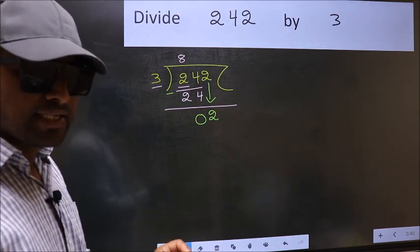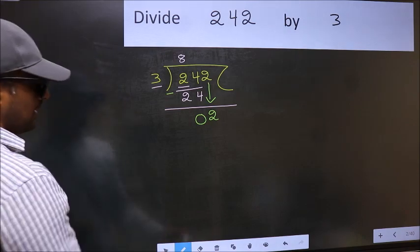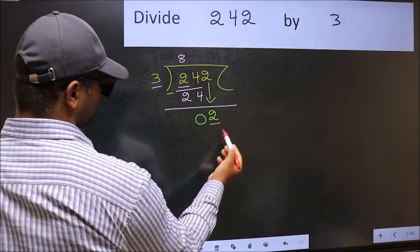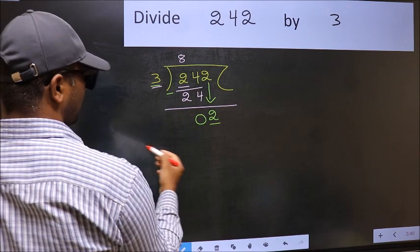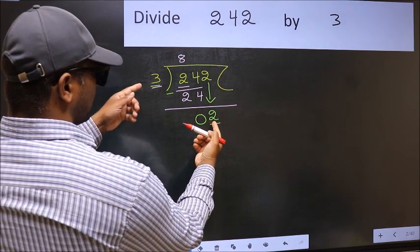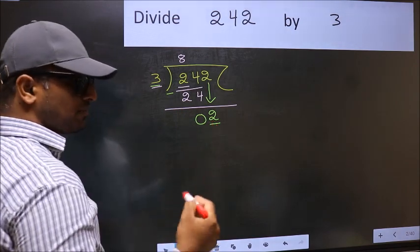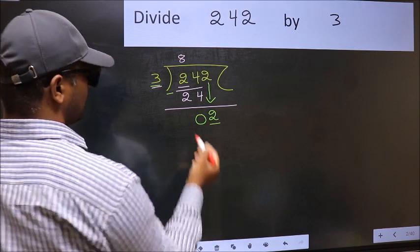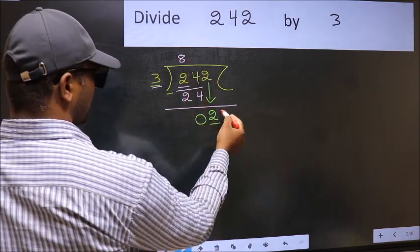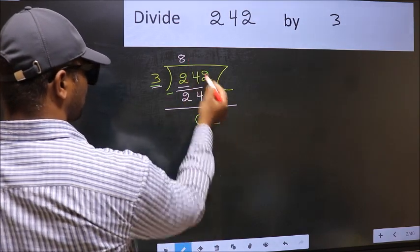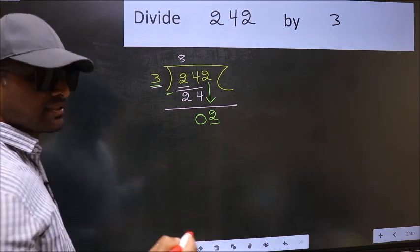And the mistake is this. Here we have 2 and here 3. 2 is smaller than 3. So what many do is, they directly put a dot and take 0. Which is wrong.